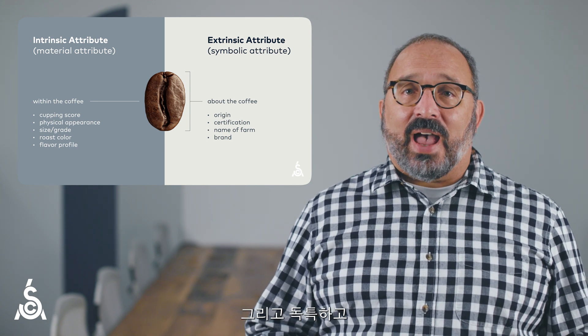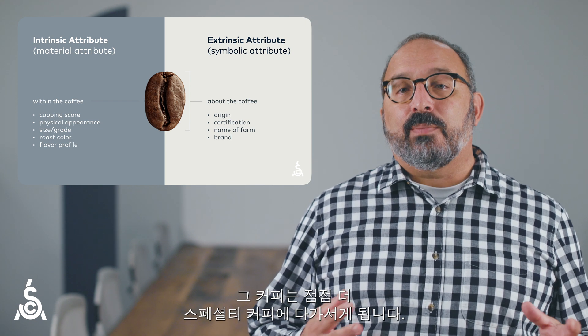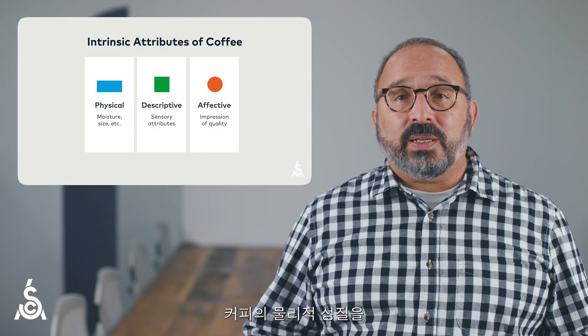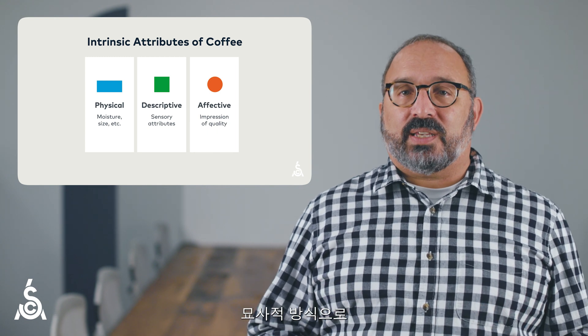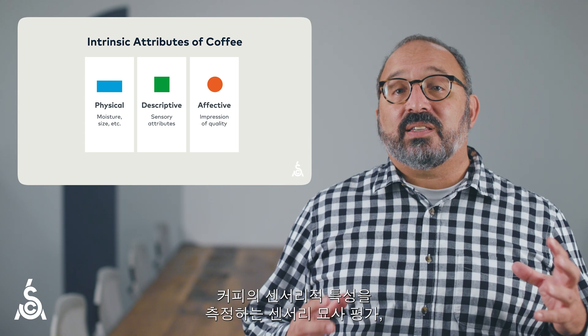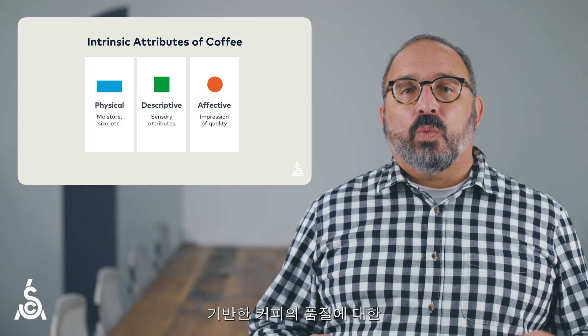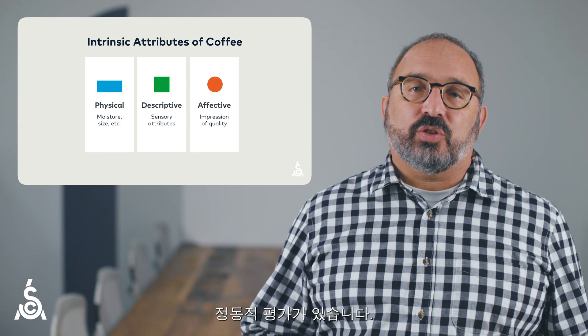In fact, as distinctive positive attributes accumulate, the coffee can be seen as getting more and more special. So, when measuring coffee attributes, there are three tools we can use to measure a coffee's intrinsic attributes: a physical assessment, where we evaluate coffee's physical properties; a sensory descriptive assessment, which measures coffee's sensory attributes in a descriptive way; and an affective assessment, which measures the cupper's impression of a coffee's quality based on its intrinsic attributes.